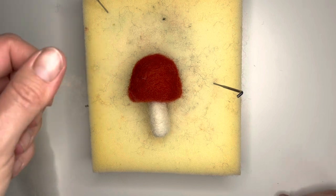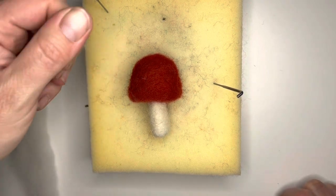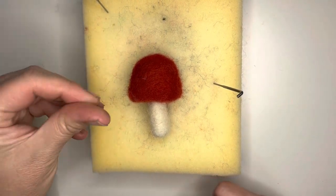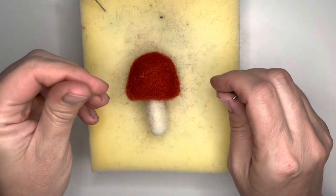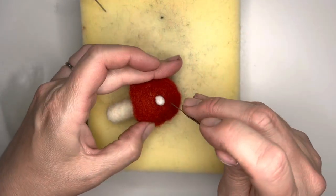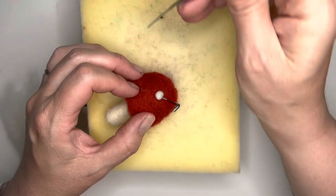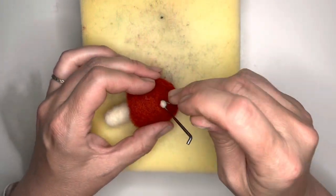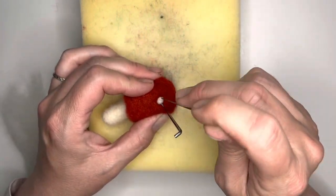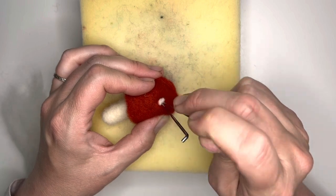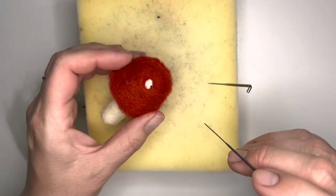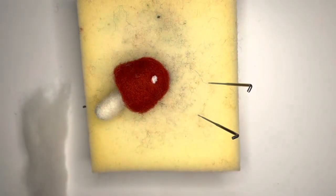All right, so now we're going to start adding some of the spots. We're using a softer, finer merino wool for the spots because it does kind of mesh in easier. So I've rolled a tiny bit of fiber. I'm going to pin that in and poke it down. Now don't poke too deep here. You want to go a little bit more shallow so that the spots stay on the surface and don't sink all the way down.